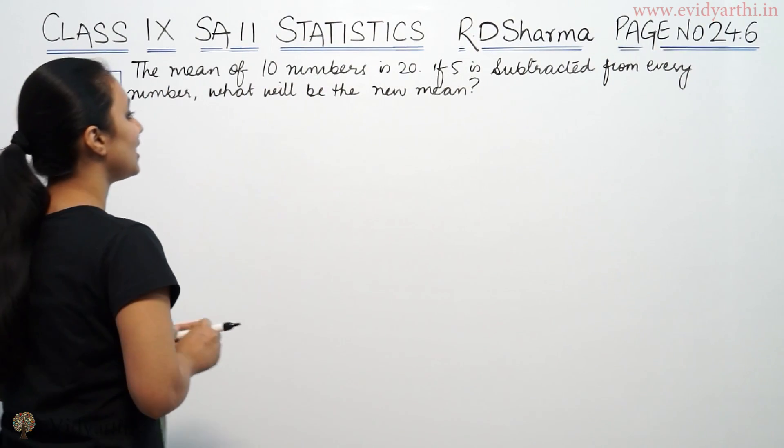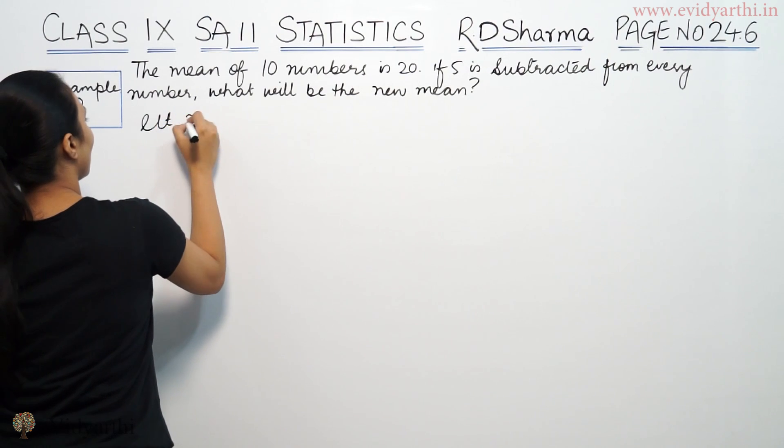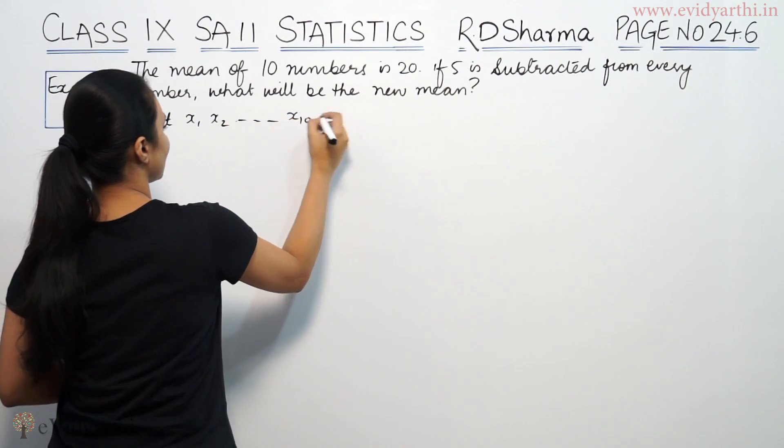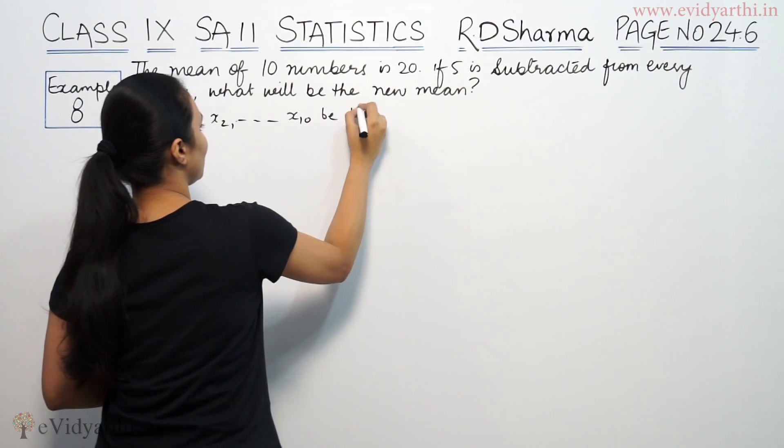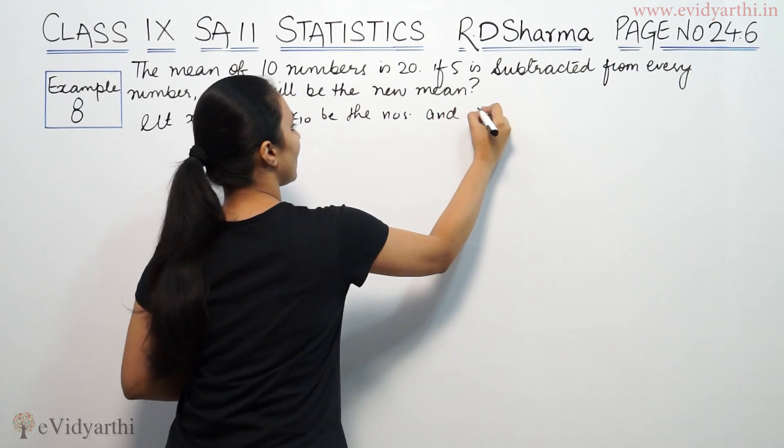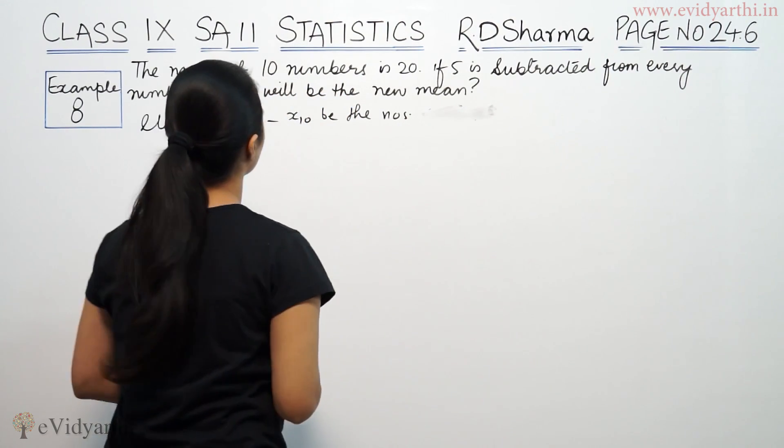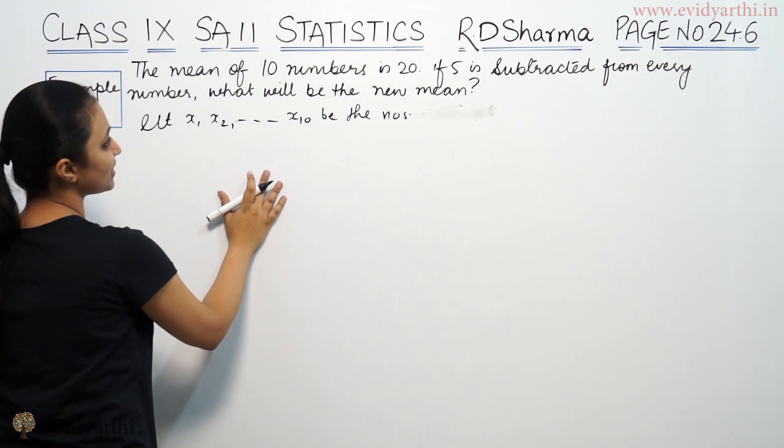So 10 numbers ka mean given hai 20. So let x1, x2, ... x10 be the numbers. 10 numbers hai humare paas.